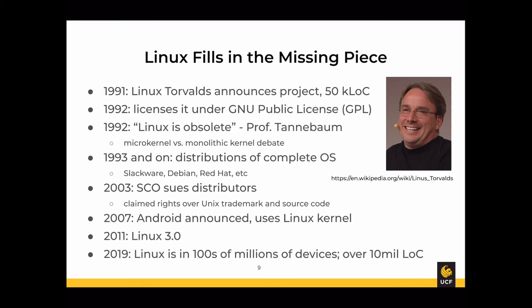A couple of interesting events in Linux history: In 2003, the company SCO sued Linux distributions, claiming rights over the Unix trademark and Linux source code. AT&T had sold Unix rights to SCO, which used that trademark to sue distributors. SCO eventually lost. In 2007, Google's Android project announced their OS would use the Linux kernel, though Android uses much less of the GNU tools, with its own tooling on top.